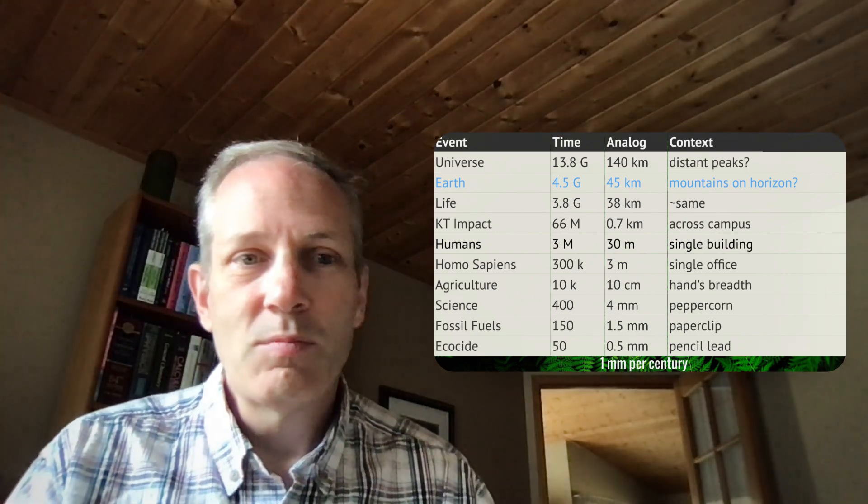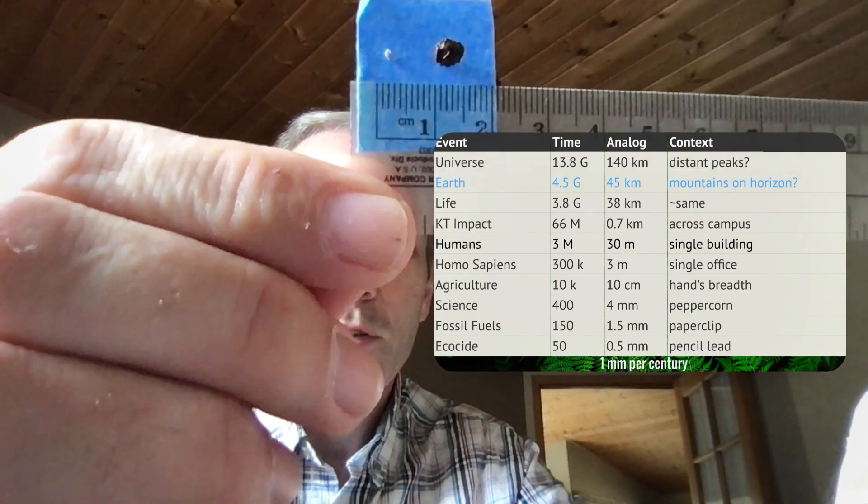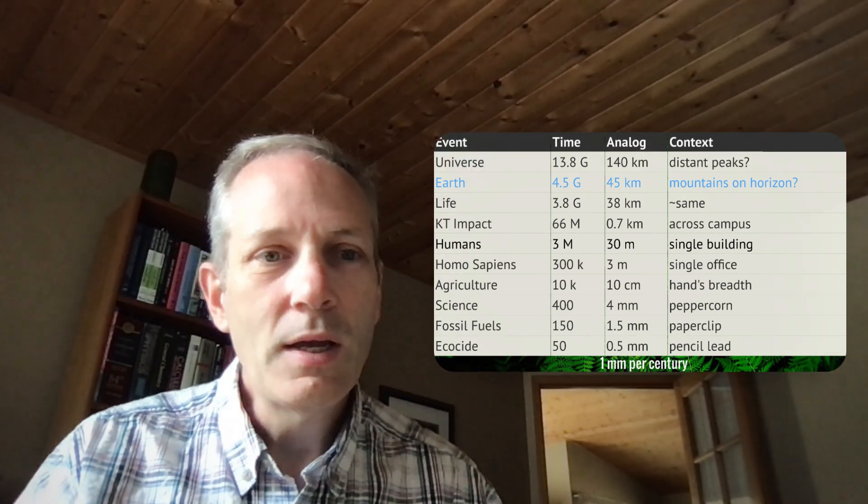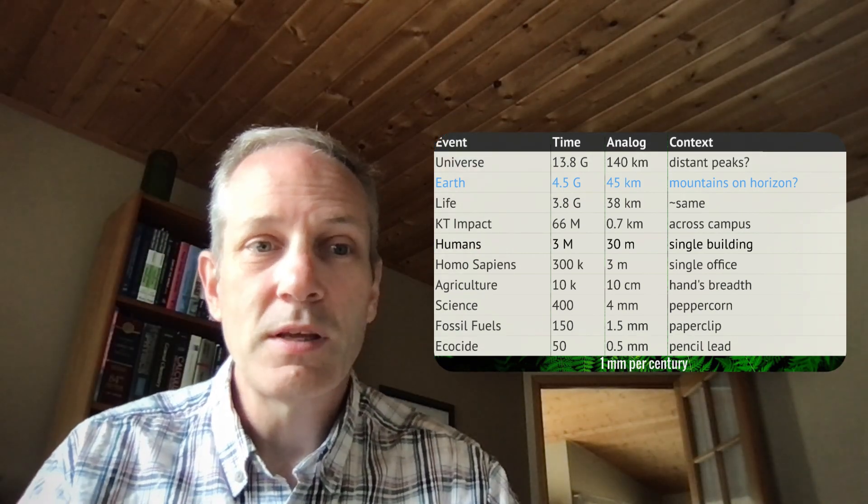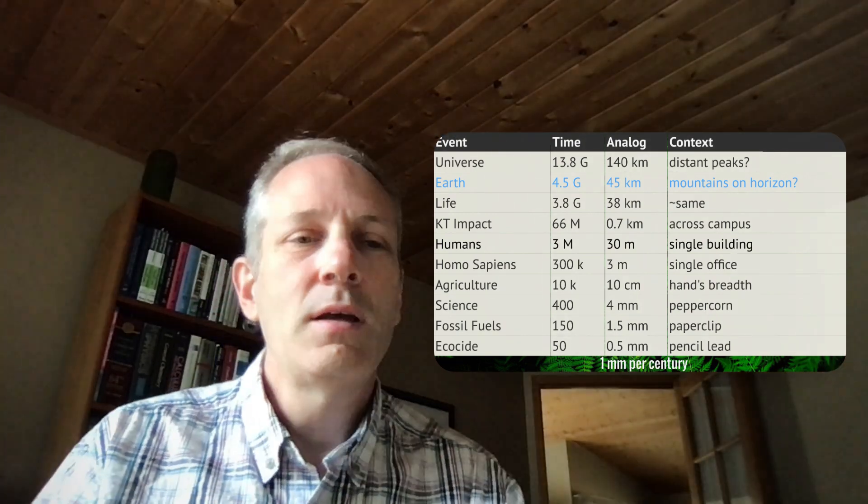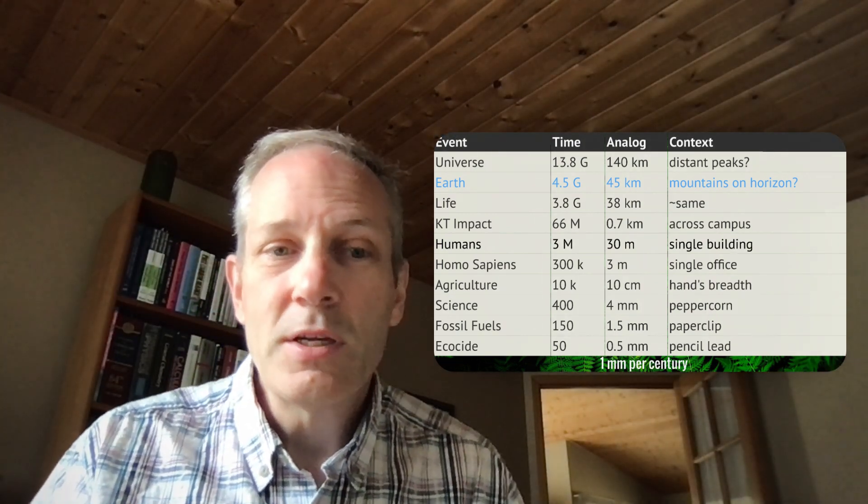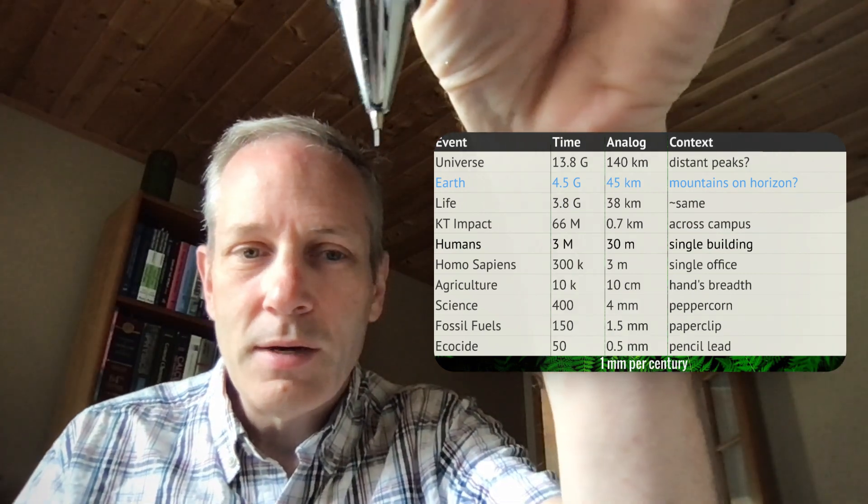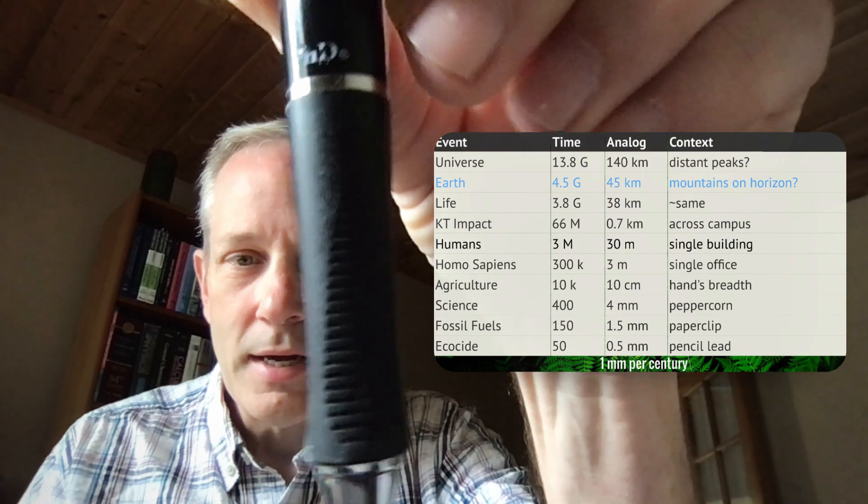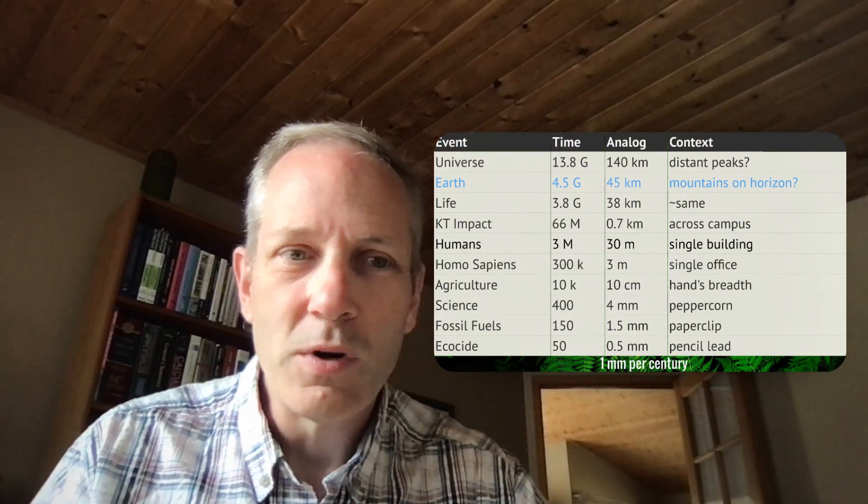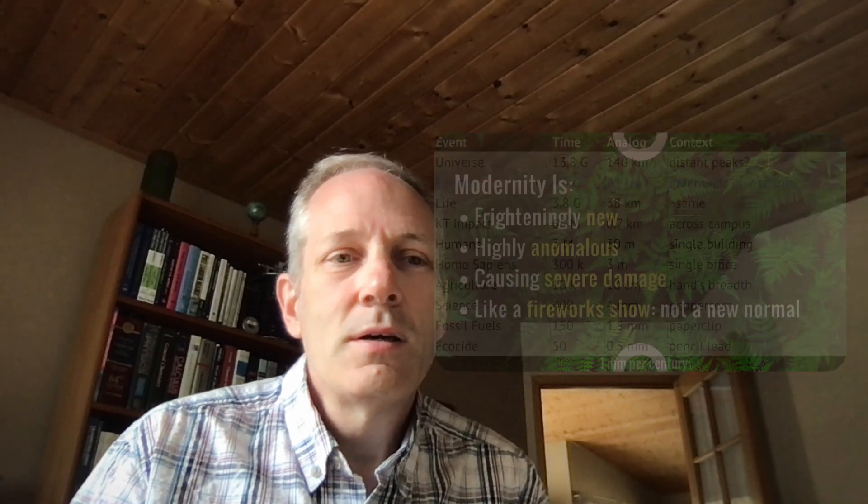Now, agriculture, as a huge change, is just kind of the width of your hand in recorded history. Only half of that. Science is a peppercorn. So here's a peppercorn next to Jupiter, remember from episode 2. And fossil fuels is the width of a paper clip. So I've got the metal portion here. And most ecological damage is just the thickness of a pencil lead, half a millimeter. And this, by the way, I have a PhD. I don't know if I've ever mentioned. It's a little bit worn.